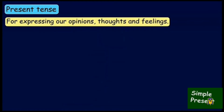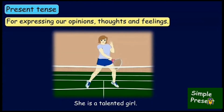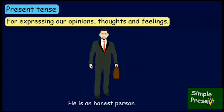We always use present tense to express our opinions, thoughts, and feelings. 'We should always respect others.' 'She is a talented girl.' 'He is an honest man.' All these sentences express opinions, thoughts, and feelings, and so they are always expressed in present tense.